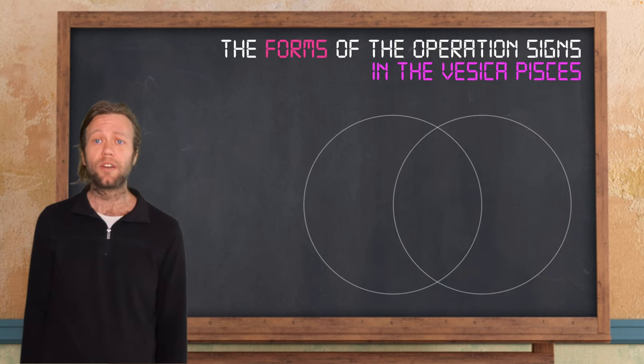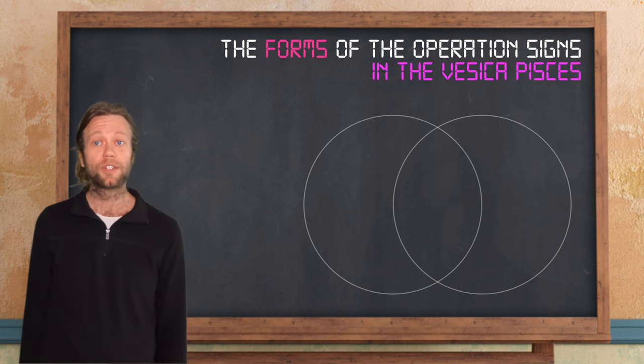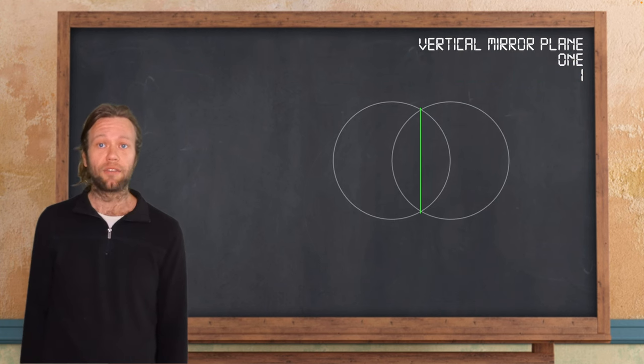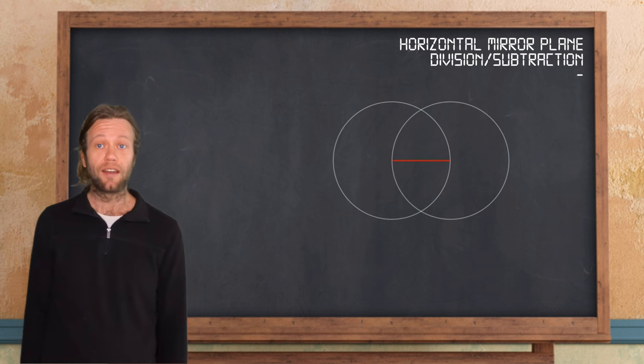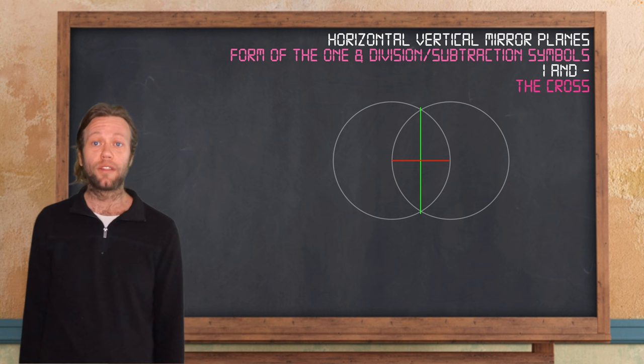Next, we'll briefly go through the forms of the common operation signs found in the Vesica Pisces, as well as a couple of extra forms that show us further important mathematical functions. So highlighted here is the vertical mirror plane of the Vesica Pisces. The vertical mirror plane also represents the number 1, as we discussed. Next, we have the horizontal mirror plane. This straight horizontal line is variously used as the symbol for subtraction if placed horizontally between two numbers, or for division if placed vertically between two numbers. And if we highlight both the horizontal and vertical mirror planes, the signs for subtraction of 1, we obtain the cross, as you see here.